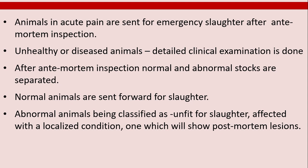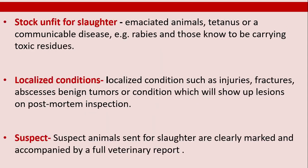Animals in acute pain are sent for emergency slaughter. After anti-mortem inspection, unhealthy or diseased animals undergo detailed clinical examination. Normal and abnormal stock are separated — normal animals are sent forward for slaughter, while abnormal animals are classified as unfit for slaughter, affected with a localized condition, or as stock showing post-mortem lesions. Animals unfit for slaughter include emaciated animals, those with tetanus or a communicable disease such as rabies, and those carrying toxic residues.